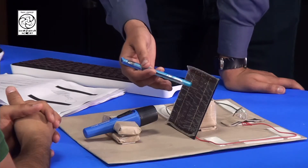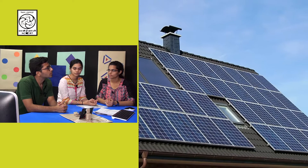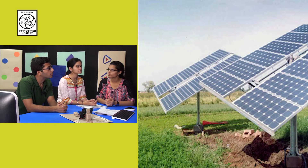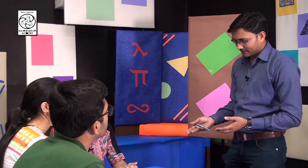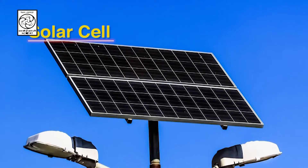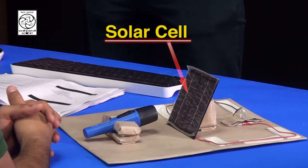Now look at this model. Have you seen it before? Sir, I have seen such things on the rooftops of some buildings. And sir, I have seen them in farms. It's something related to the sun. It is a device which converts solar energy into electrical energy and is called solar cell. Now, we will talk about conversion of solar energy into electrical energy. The topic of our discussion is solar cell, and this model is of solar cell. Solar cell is basically a P-N junction device.